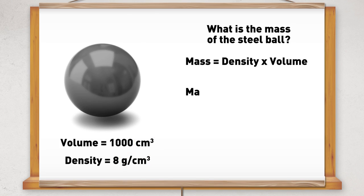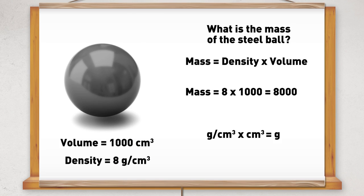So the mass equals the density of 8 multiplied by the volume of 1,000, which equals 8,000. As the unit of density is grams per centimetre cubed, the unit of calculated mass is grams. So the final answer is 8,000 grams.